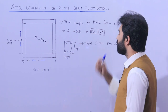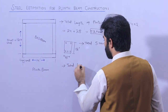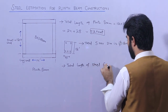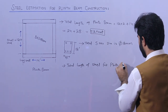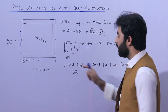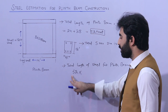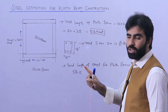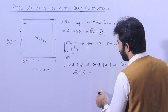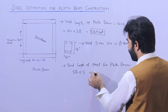Now I need to find the total length of steel rod. We have five numbers — three at the bottom and two at the top — with a diameter of 12 millimeters. The perimeter of this plinth beam is 52 feet, so each bar is 52 feet long. Total length of steel = 52 feet × 5 numbers = 260 feet.